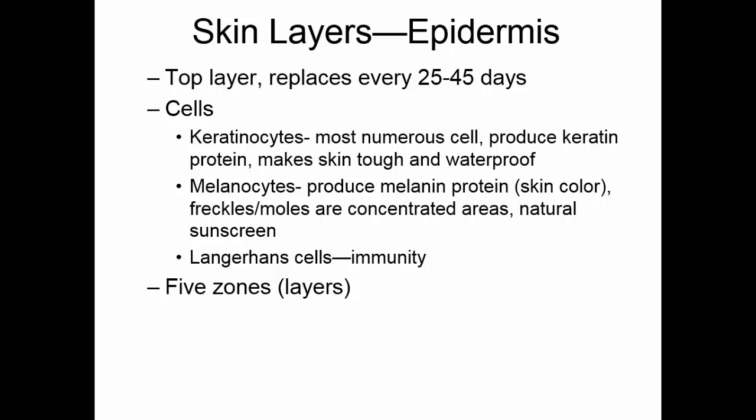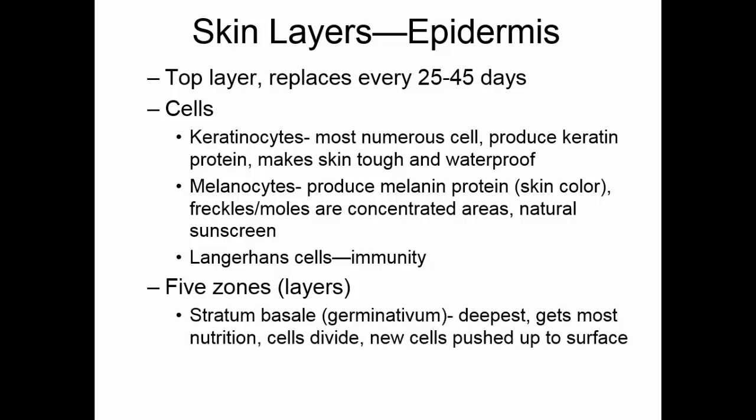There are five different layers to the epidermis, but we'll focus on two. The innermost layer, closest to the dermis, is known as the stratum basale or stratum germinativum. This layer gets the most nutrition and cells here divide most actively. As new cells are pushed up toward the surface, they accumulate more and more keratin until they are in the last layers where they are fully dead and keratinized. The outermost layer is the stratum corneum — 20 to 30 cell layers thick, all dead but very protective, sloughing off easily.